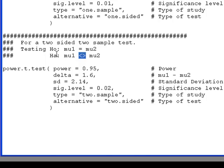And the syntax is incredibly the same. You pick the power that you want for your test. You have to pick a difference that you hope to find with that sort of power. So if there's a difference of 1.6 units between mu1 and mu2, I want to be able to find that with probability 0.95.